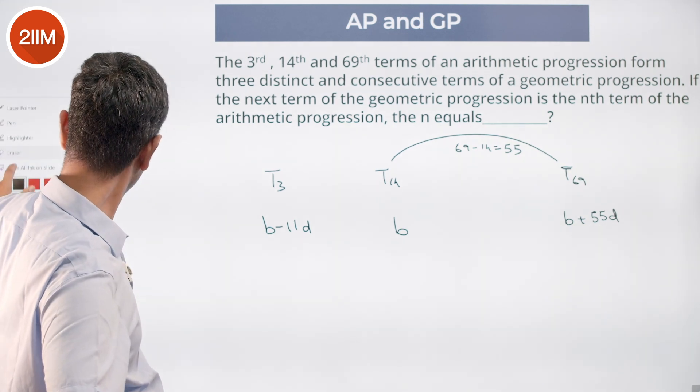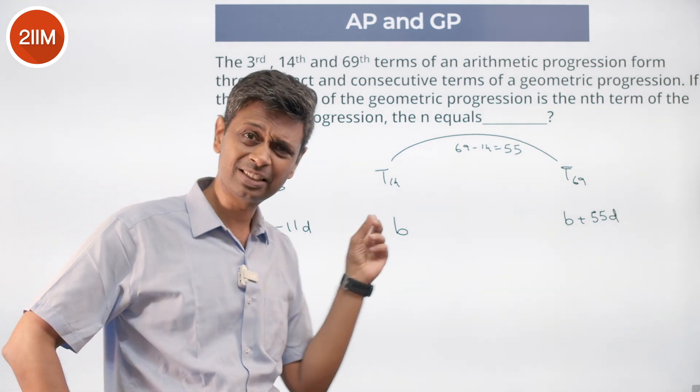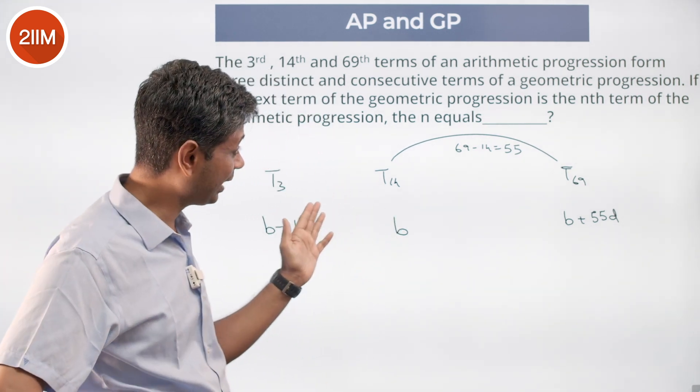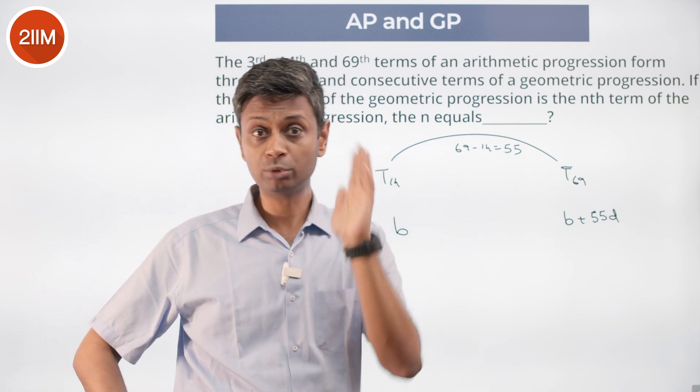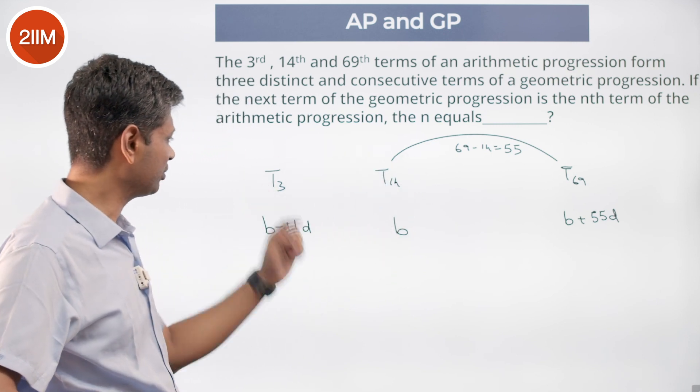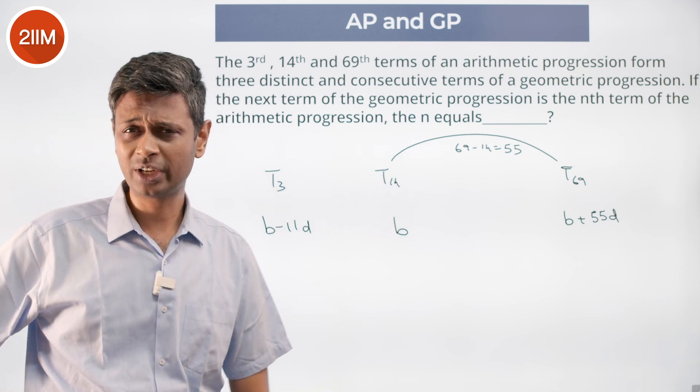So I say hey nice, interesting. I am going to anchor around this term as a middle term. From here I have to add common difference 55 times to go here. 14th term, 69th term. Backward, I have to subtract common difference 11 times to get here.